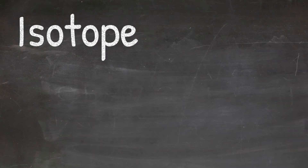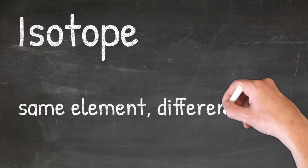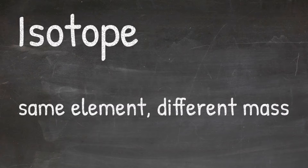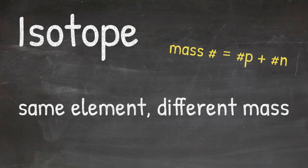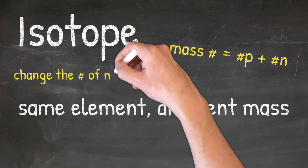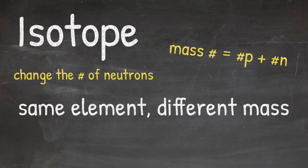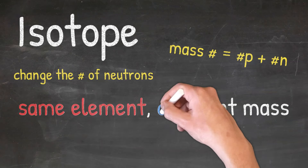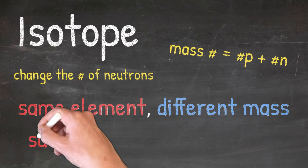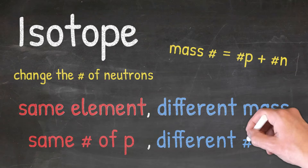An isotope occurs when we have the same element, but they have different masses. You should recall from our previous video on determining the number of protons, neutrons, and electrons in an atom, that the mass number comes from the number of protons plus the number of neutrons. You should also remember that in order to keep the element the same, you have to keep the number of protons the same. This means that the only way to have the same element but a different mass is to change the number of neutrons. Simply put, an isotope forms when you have the same element but a different mass, meaning the same number of protons but a different number of neutrons.